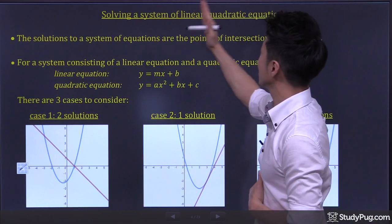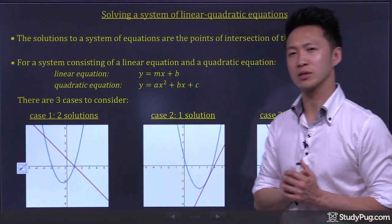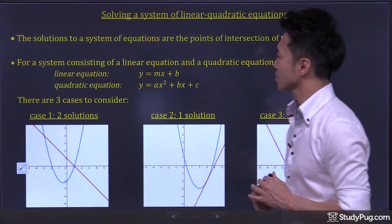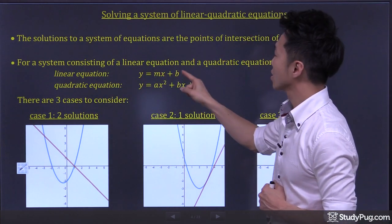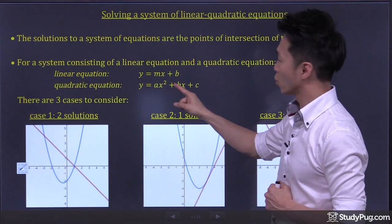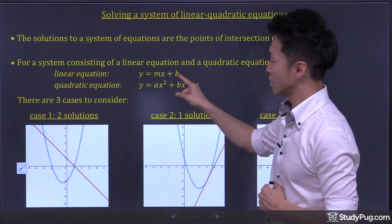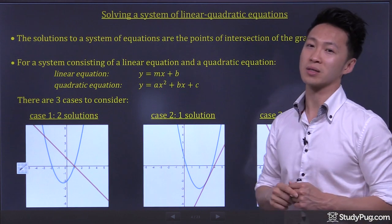Solving a system of linear quadratic equations. Let's do a quick review. One way to represent a linear equation is the slope and y-intercept form, where m stands for the slope, b stands for the y-intercept.